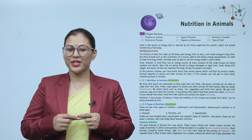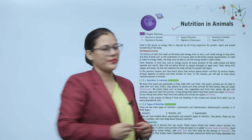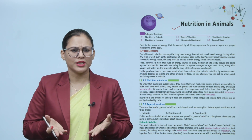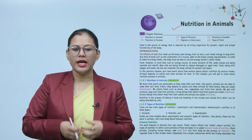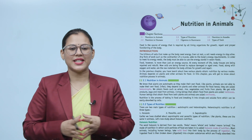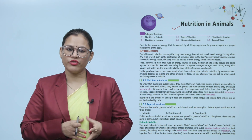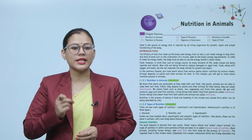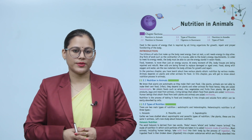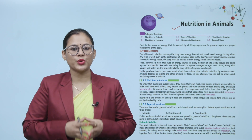Hello children, how are you all? I'm sure you're all doing good. Let's start today's chapter: Nutrition and Animals. Food is a source of energy that is required by all living organisms for growth, repair and proper functioning of the body. The trillions of cells that make up the body need energy even at rest. A cell needs energy to stay alive. Any form of work, such as the contraction of a muscle, adds to the body's energy requirements.